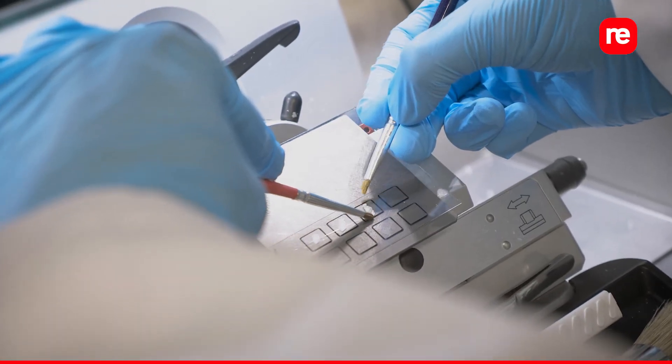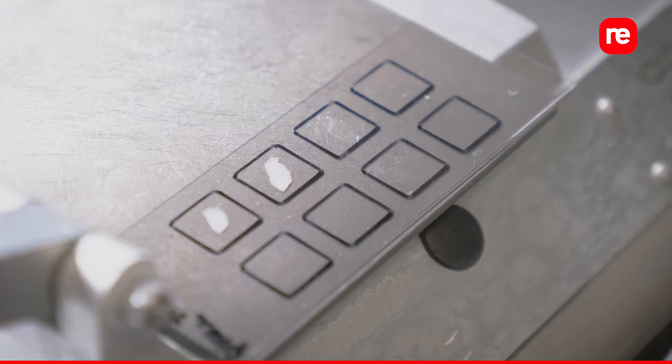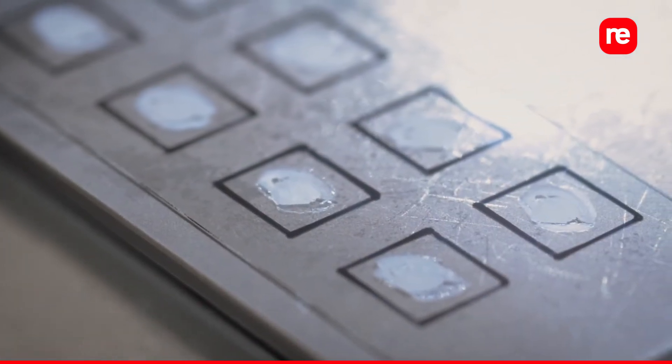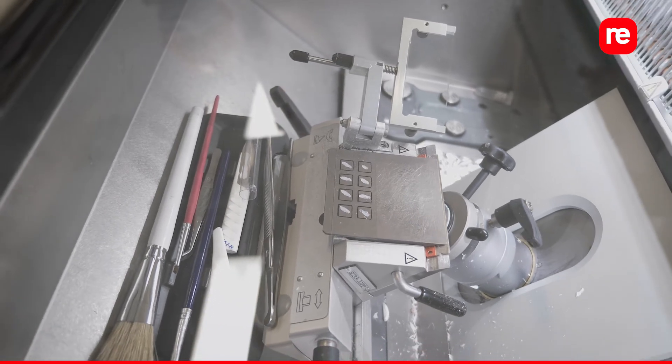Place the slide on the surface of the cryostat for the sections to freeze. Continue repeating this process until all eight samples have been transferred to the slide.